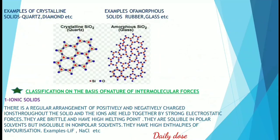Moving on to classification on the basis of nature of intermolecular forces — first we have ionic solids. Ionic solids are neutral overall but consist of positively charged ions called cations and negatively charged ions called anions. There is a regular arrangement of those ions throughout the solid, and the ions are held together by strong electrostatic forces. They are brittle and have a high melting point.